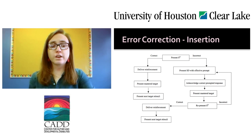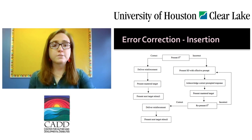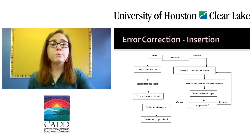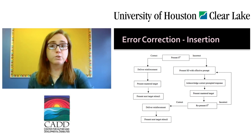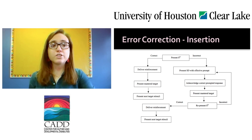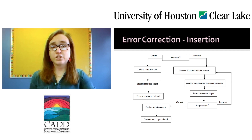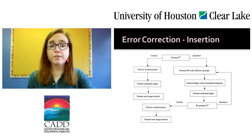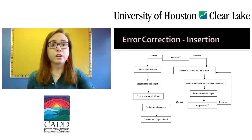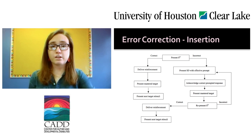In the insertion teaching condition of error correction, the experimenter presented the SD; contingent on a correct response, delivered reinforcement, presented a master target, and then presented the next training target. Contingent on an incorrect response or no response, the experimenter presented the SD with an effective prompt, acknowledged the correct prompted response, presented a master target, and re-presented the initial SD. If the learner then provided a correct response, we delivered reinforcement and presented the next training trial. If the learner gave an incorrect response again, the process of the error correction trial was repeated up to a maximum of five times.